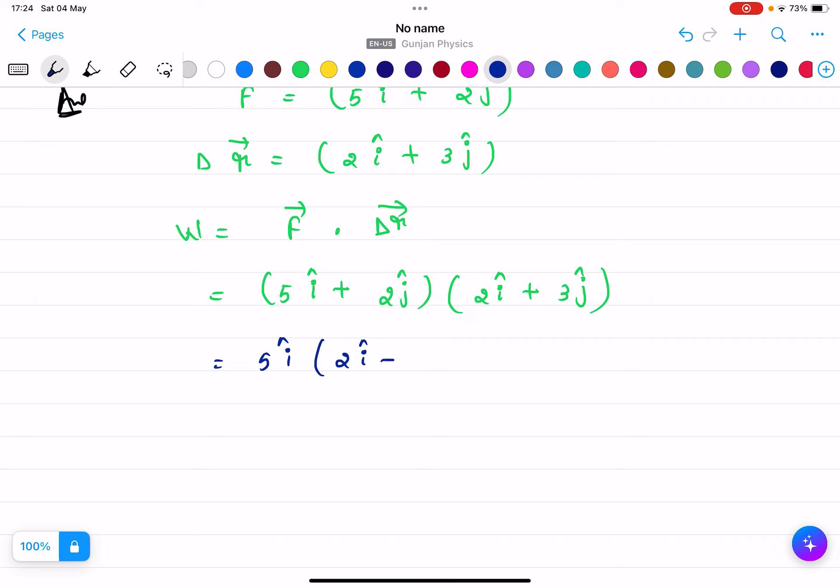So it will be 10 i dot i plus 15 i dot j plus 4 i dot j plus 6 j dot j. Now, i dot i will be 1, i dot j will be 0, this will be 0, and this will be 1.